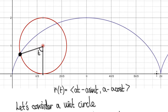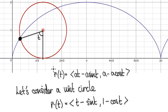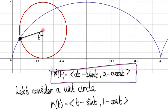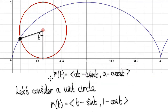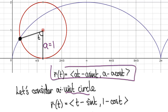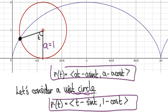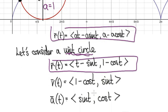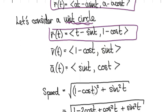We've seen that the position vector of a cycloid is given by this formula. Currently the radius of the circle is a, but we can simplify the whole situation by looking at a unit circle where the radius is 1. So this whole thing becomes simpler — this is for a unit circle, and when the radius is 1 it becomes slightly simpler to work with.